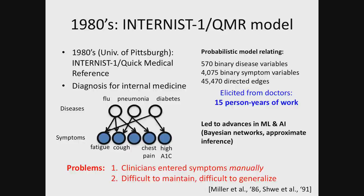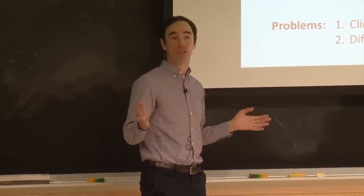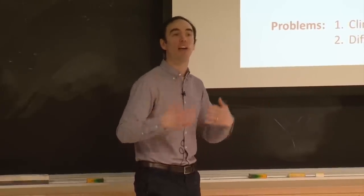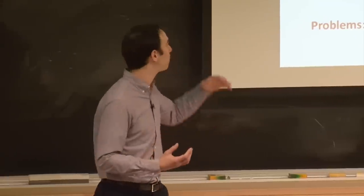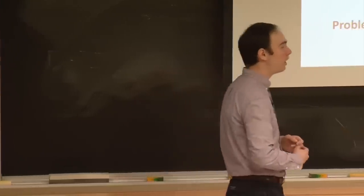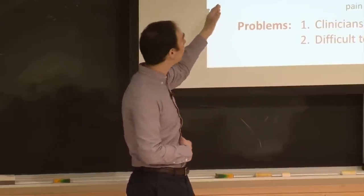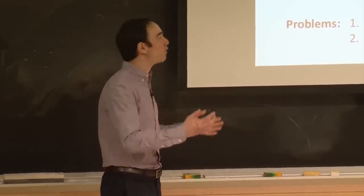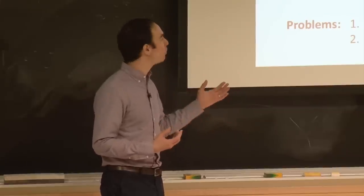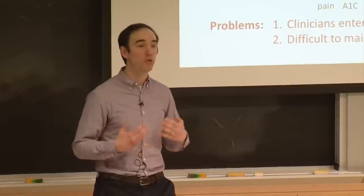Moreover, despite the effort required, these systems were also really difficult to maintain. There was no machine learning — it was called artificial intelligence because one tried to reason artificially like humans, but there was no learning from data. So if this was developed in Pittsburgh and you go to Los Angeles, Beijing, or London, you have to re-derive parts of the model from scratch. Prior probabilities of diseases vary greatly depending on where you are in the world. And as new medical discoveries are made, one has to again update these models — a huge blocker to deployment.